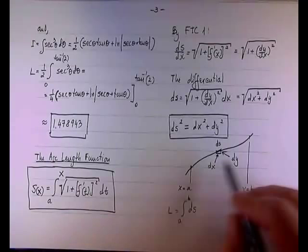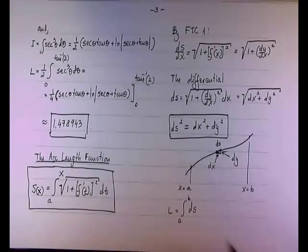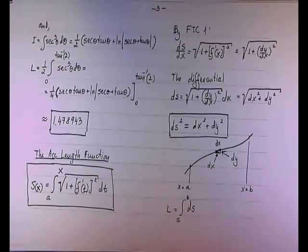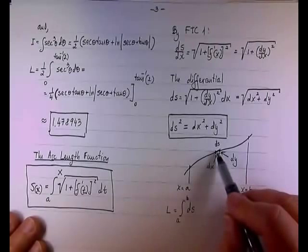So instead of taking, breaking this down into delta, and take the limit as n goes to infinity, you know, and use the limit of Riemann's sum to come up with the integral, we can take the differential approach